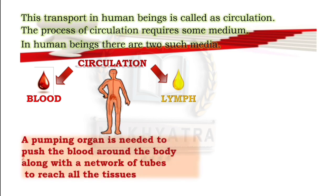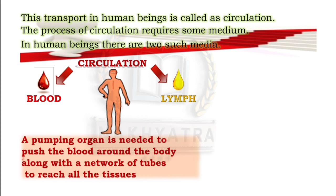A pumping organ is needed to push the blood around the body, along with a network of tubes to reach all the tissues. So to reach all the tissues, a pumping organ is needed so that the blood circulates around the body.